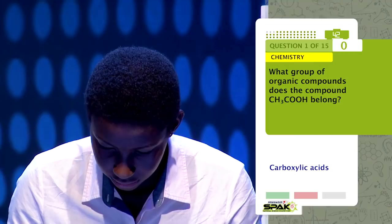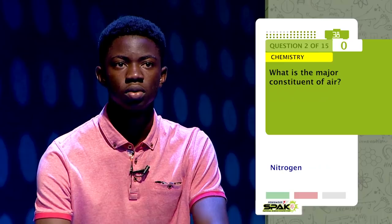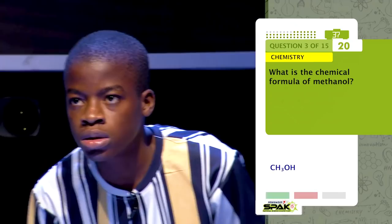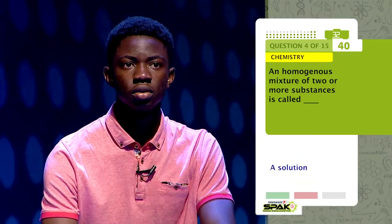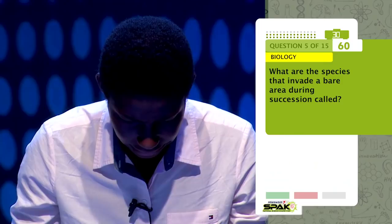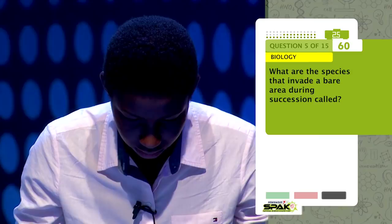In the advanced round, rapid-fire questions were asked: What group of organic compounds does CH3 belong to? Carboxylic acid. Pure water can be obtained from a mixture of salt and water by what separation? Evaporation. On which trophic level can organisms that use solar energy to make their food be found? Platyhelminthes is described as? Annelida. What is the chemical formula for methanol? C2H5OH. A homogeneous mixture of two or more substances is called what? Solution. Such excretion is carried out in earthworms through what organ? Nephridia. What are the species that invade a bare area during succession called? Pioneers. What is the term given to community ecology? Climax.